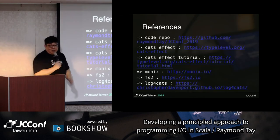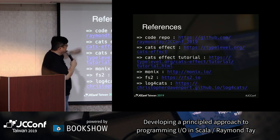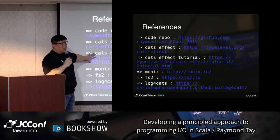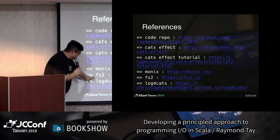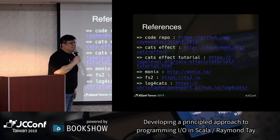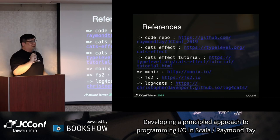These are the list of references — this will be the code repo, and the CATS Effect main page and tutorial page. Highly recommend you go through this a couple of times. Monix, Monix FS2, Log for Cats. That's all I have — any questions?